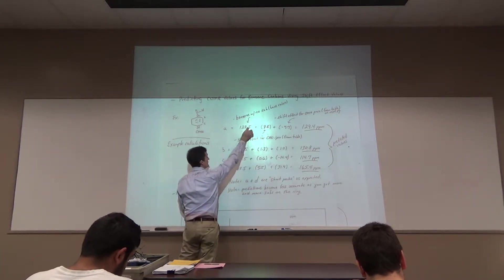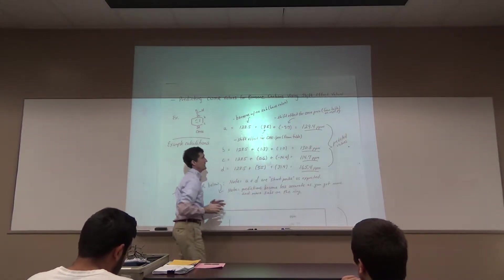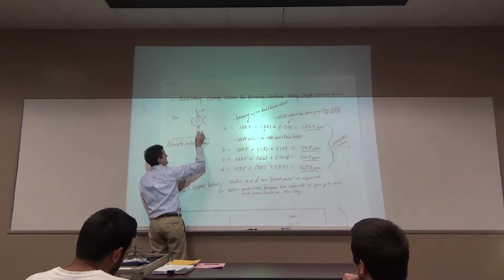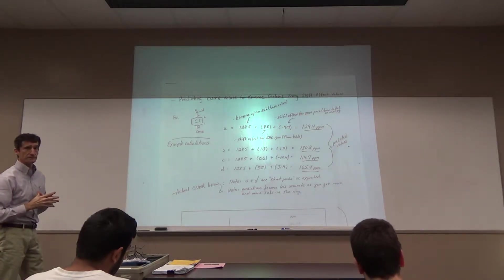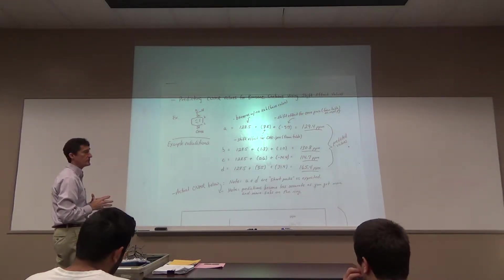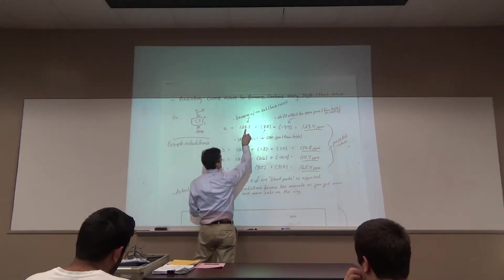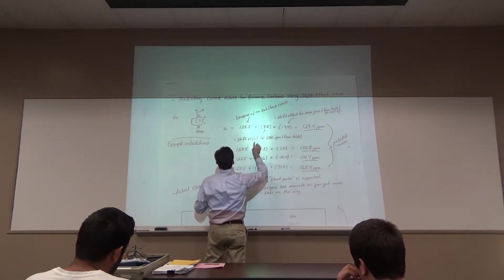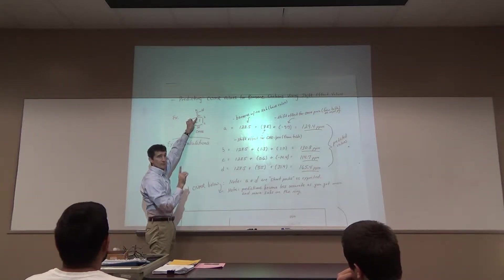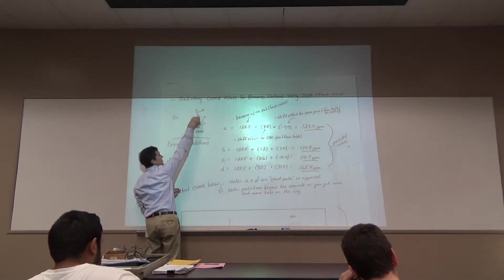You start with benzene, which gives a signal at 128.5, then you have shift effect values - what do the substituents do to the signals? Do they move the signal upfield or downfield, and by how much? There are tables for that. For example, if we calculate carbon A, we start with the base value of benzene, 128.5, then add the effect for the aldehyde group. The aldehyde is on this carbon, called the ipso carbon or C1. You look at the table and you'll see 8.6.